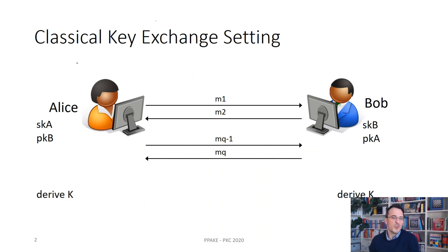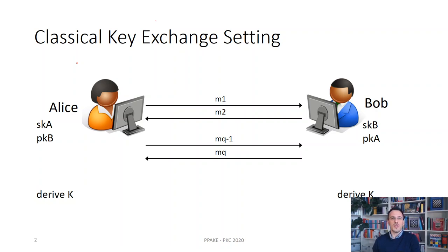In classical key exchange, you usually have the setting where there are two parties, Alice and Bob, and they want to communicate over an insecure channel. The goal is to derive a session key that can be used to symmetrically protect the following data. Typically, the security notion requires that this key is indistinguishable from random, so that you can plug in the symmetric security games quite nicely.